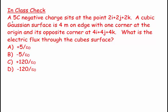Welcome. This question says a 5 Coulomb negative charge sits at a point which is 2i plus 2j plus 2k meters. A cubic Gaussian surface is 4 meters on edge with one corner at the origin and its opposite corner at 4i plus 4j plus 4k meters. What is the electric flux through the cube's surface?